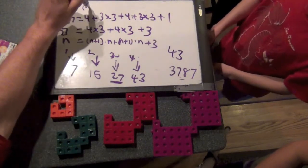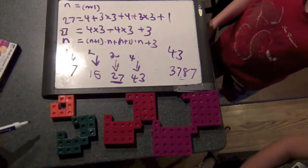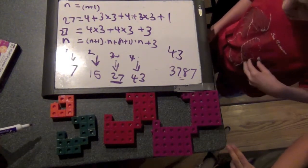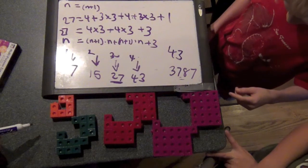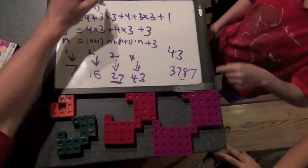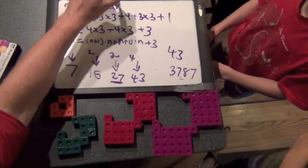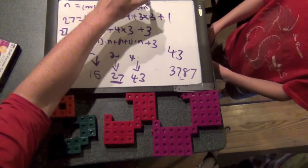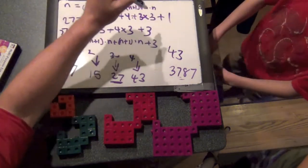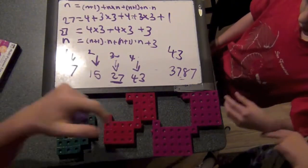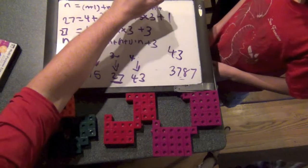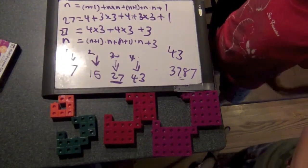N plus one, and then what? And then it's N times N, plus N plus one, plus N times N. And then there's the one left over, right? Yeah. Plus one. Awesome. Good pattern finding, guys.